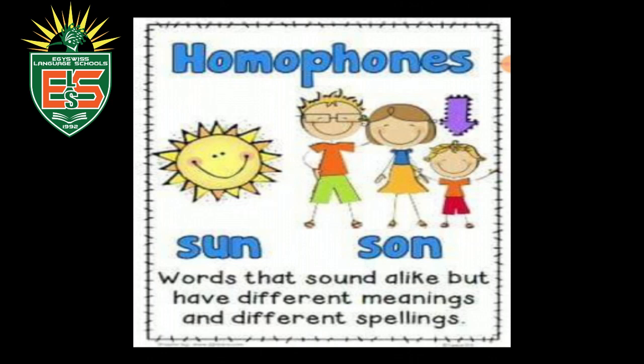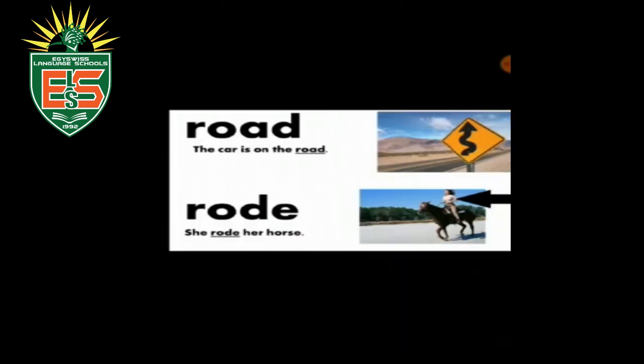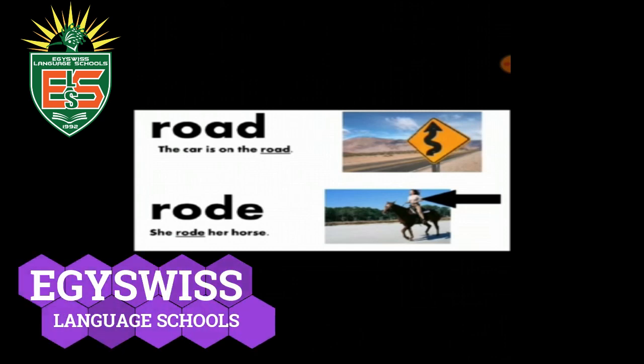Like these two words: 'son' and 'sun' — words that sound alike, different meanings, different spellings. Let's take another example: 'road' — the car is on the road. 'Rode' — she rode her horse. These are homophones.